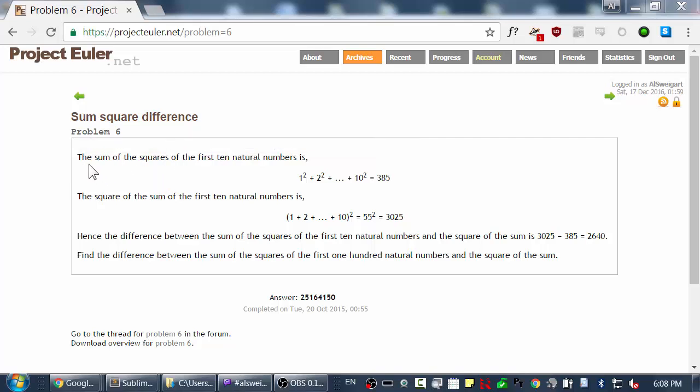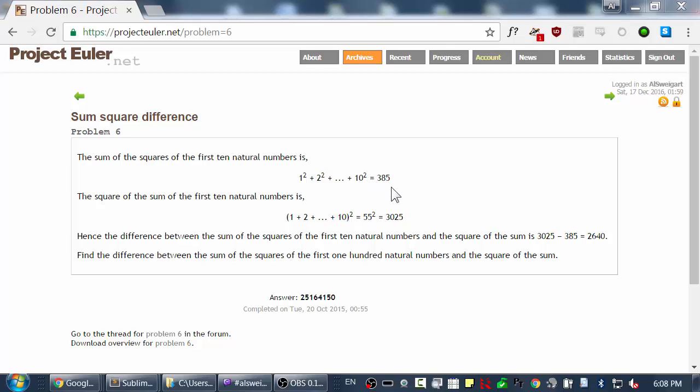And here's the problem. It tells us the sum of the squares of the first 10 natural numbers is 1 squared plus 2 squared plus, and so on and so on, all the way up to plus 10 squared is 385.